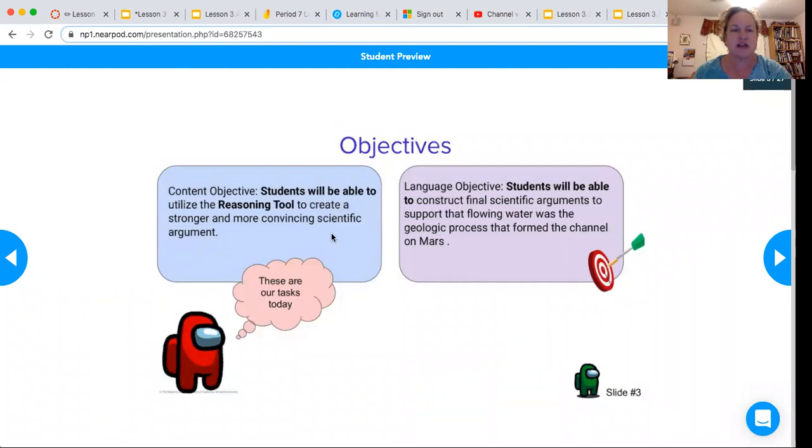So the objectives, let me share my screen. The objectives that we have today are that the content objective is students will be able to utilize the reasoning tool to create a stronger and more convincing scientific argument and the language objective is that students will be able to construct final scientific arguments to support that flowing water was the geologic process that formed the channel on Mars.